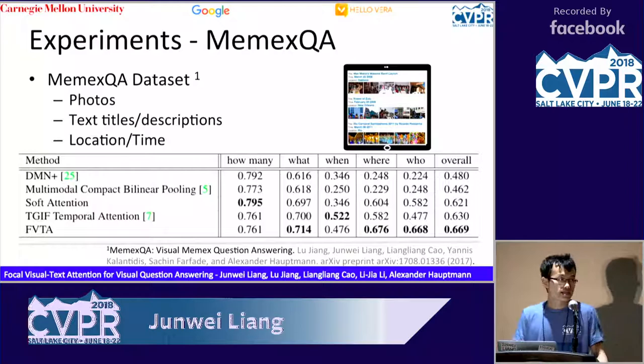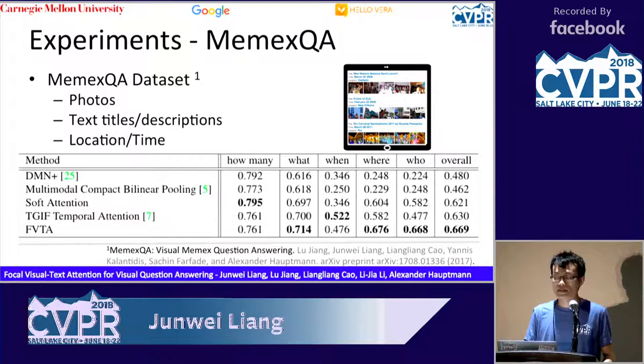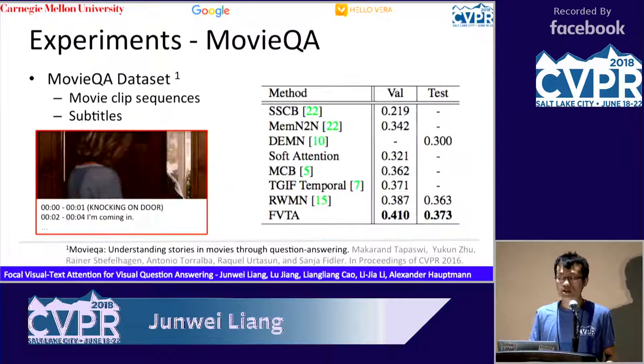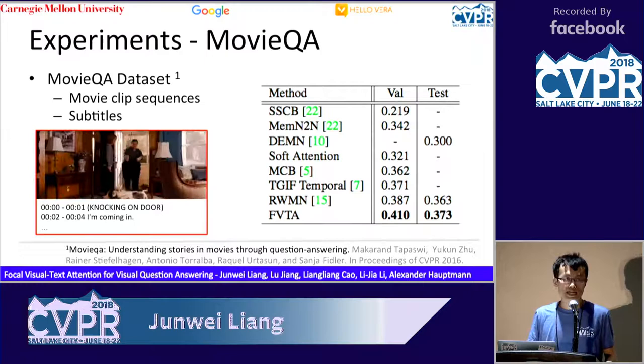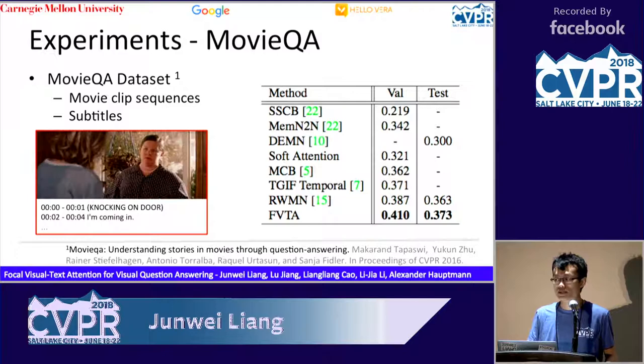To evaluate our model on real-world personal collections, we experiment on the MAMX QA dataset, where visual and text multi-sequence data is given. We compare our model with recent traditional VQA methods, and our model achieves the overall best performance. We also experiment on the MAMX QA dataset, which is a popular benchmark for collective reasoning since 2016. It includes movie clip sequences and subtitles as input, and our model achieves superior results on this dataset as well.